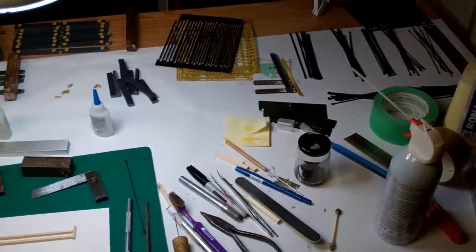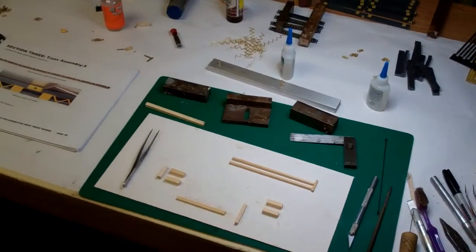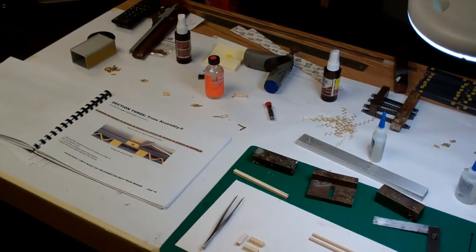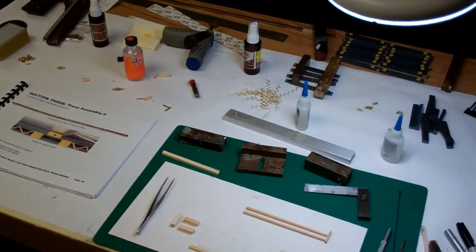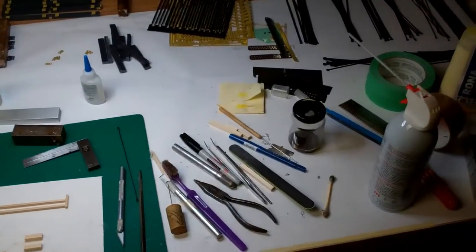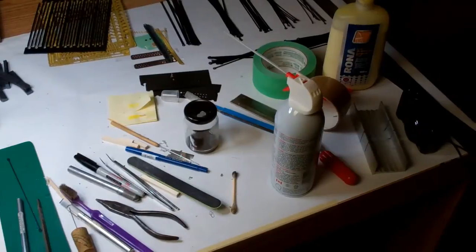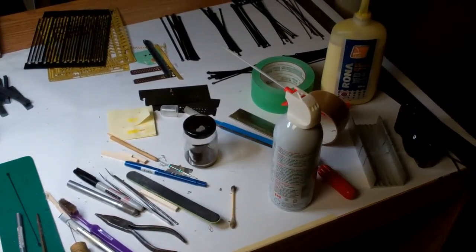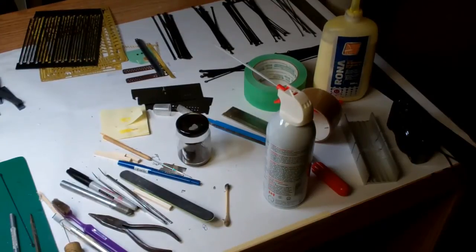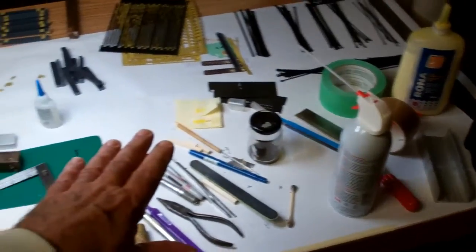My workbench ends up looking cluttered with all the bits and pieces and tools I've been using. Now we're working on the top cords, so it's time to clean up the bench because I'm going to need a nice flat, smooth, straight edge surface. They're 30 inches long so I need a lot of room.